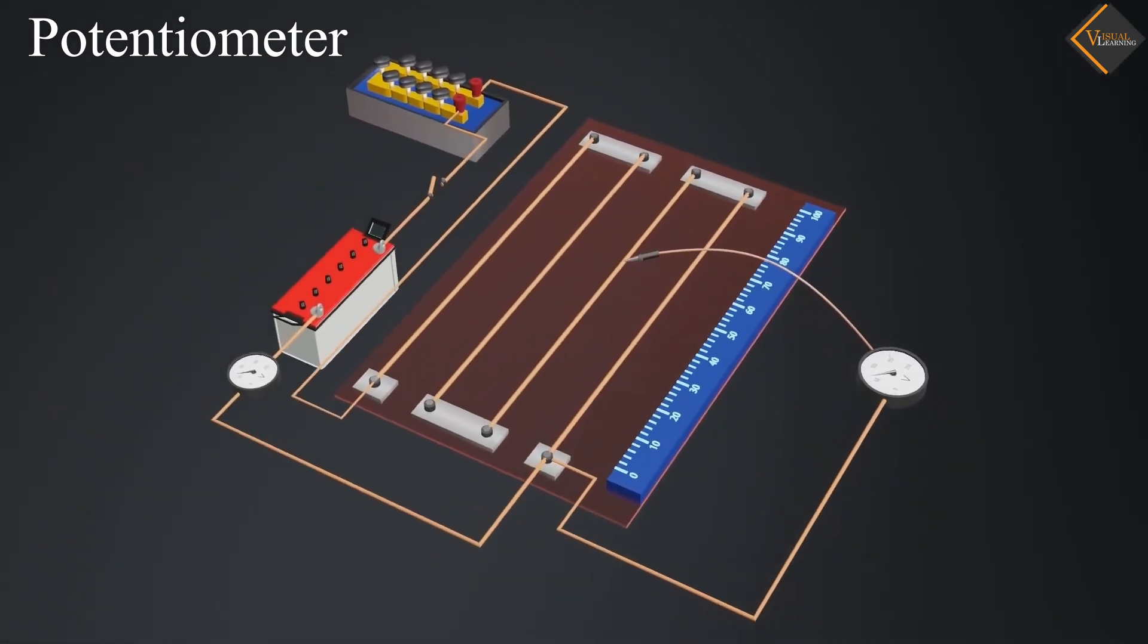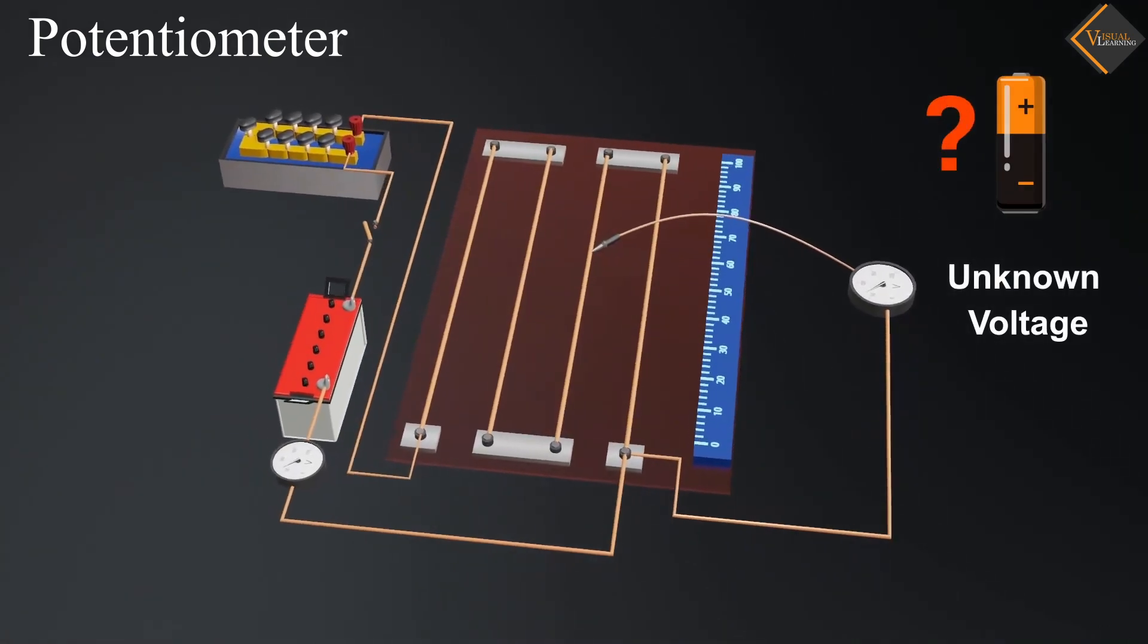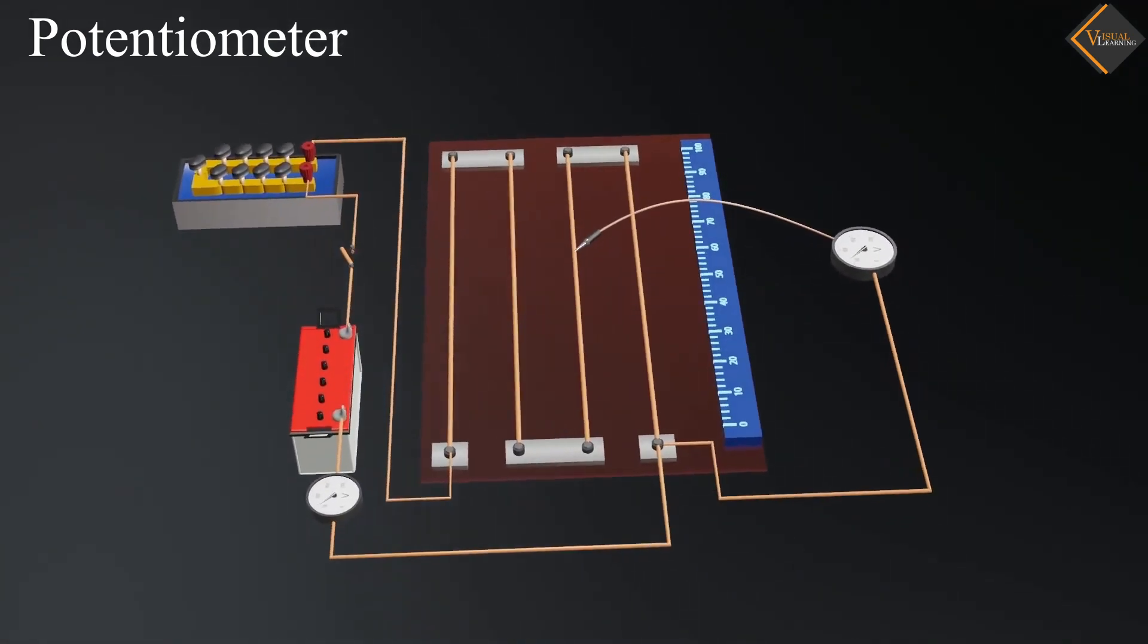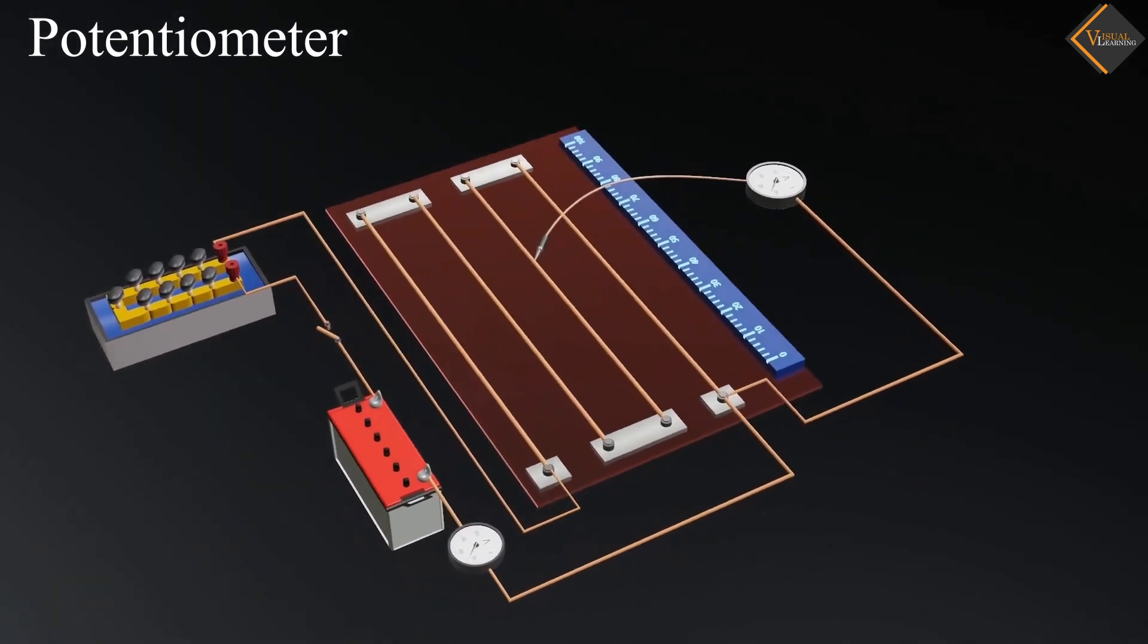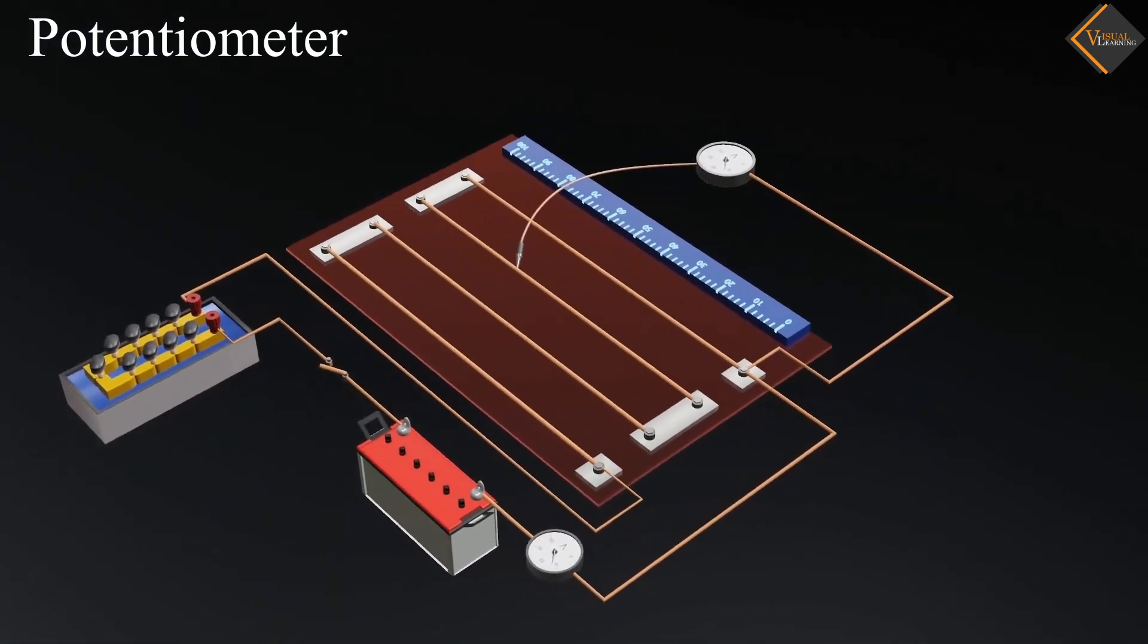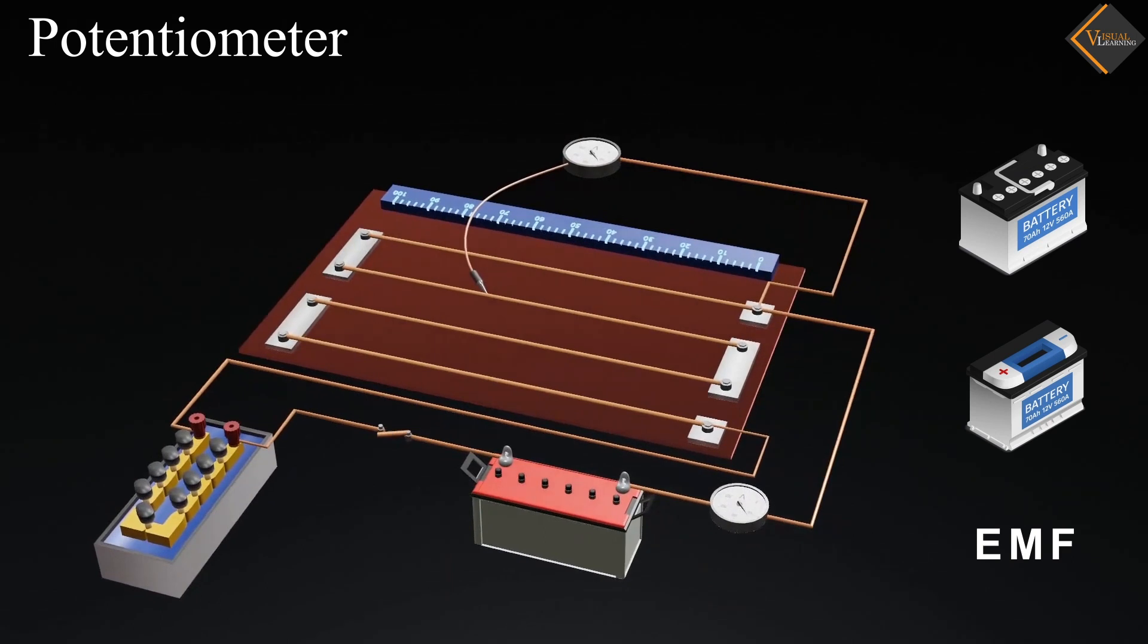The potentiometer is an instrument used to measure unknown voltage. To do this, the unknown voltage is first compared. Additionally, the potentiometer is used to determine internal resistance and compare the EMF of different cells.